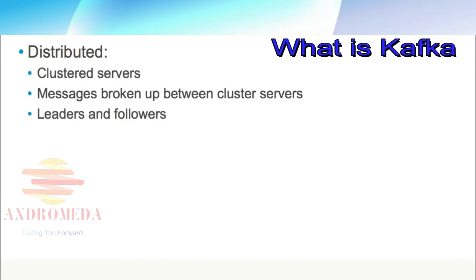Apache Kafka is distributed. It's composed of a cluster of servers. The messages being sent to Apache Kafka are split between the servers in this cluster — not the message itself broken up, but the messages distributed across clusters. As a distributed system, it has the notion of leaders and followers, which we'll cover in more detail in future segments.